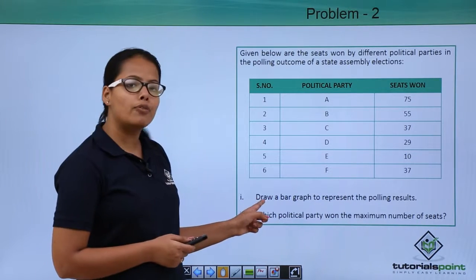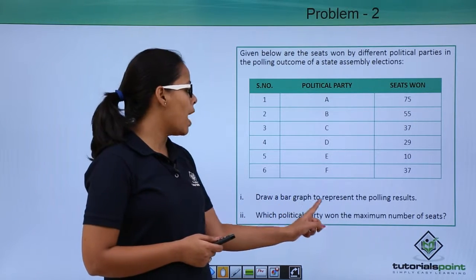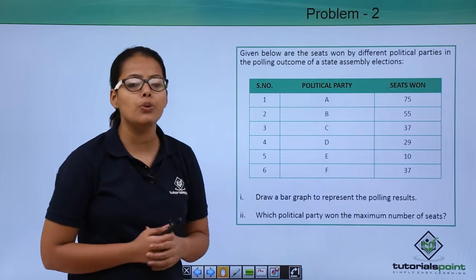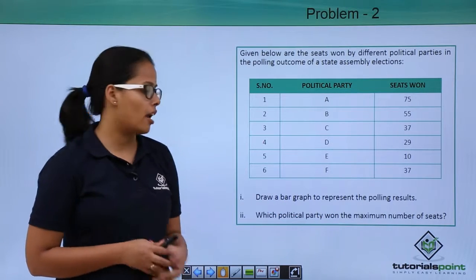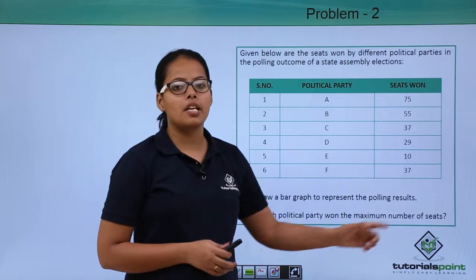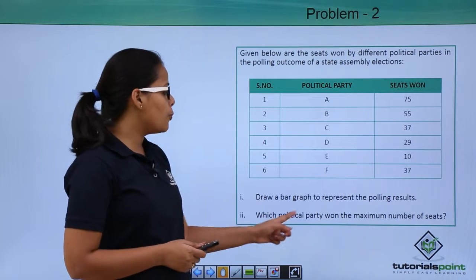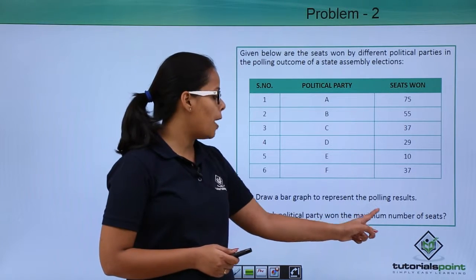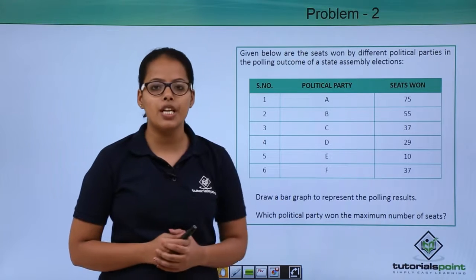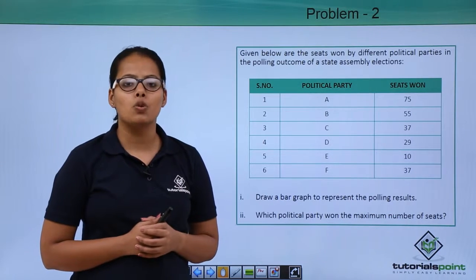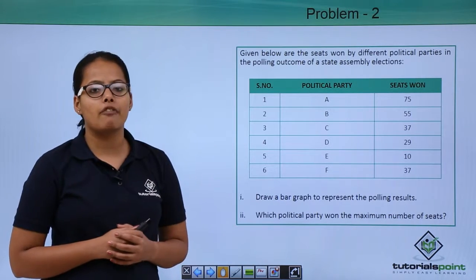Now, what you have to do here, you need to draw a bar graph. Here it has been mentioned to you that you need to plot a bar graph to represent the polling results. Which political party won the maximum number of seats? You can easily answer this question. Now let's plot the bar graph first.